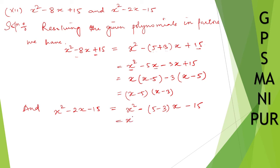So x² - 5x + 3x - 15. Take x common, so x - 5. And plus 3 take common, x - 5. This equals (x-5)(x+3).